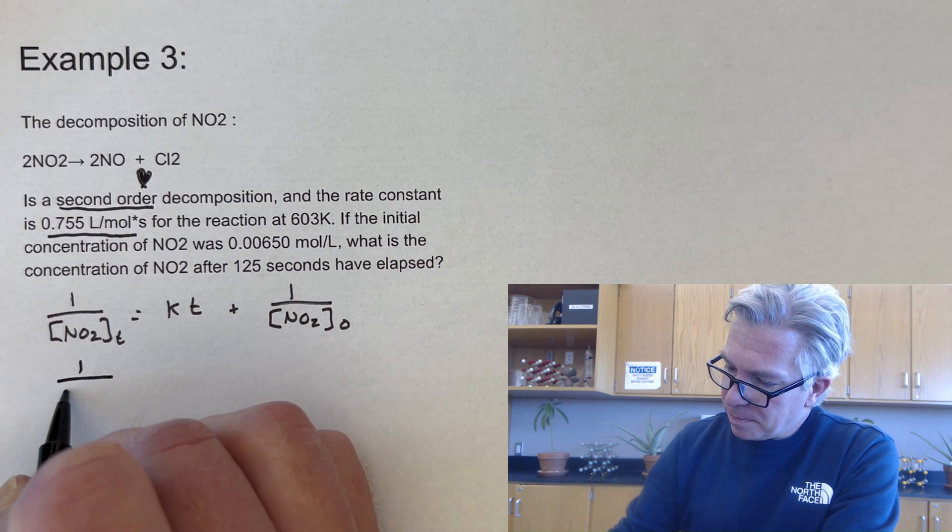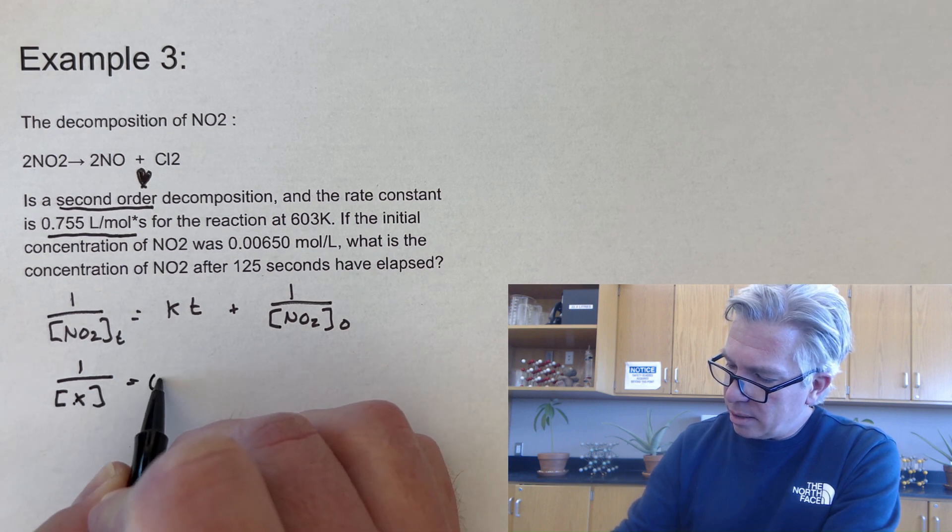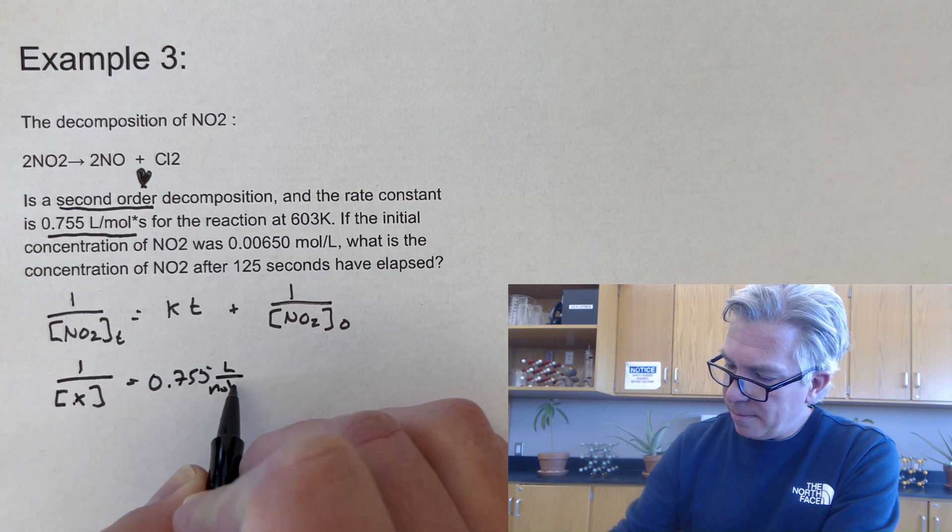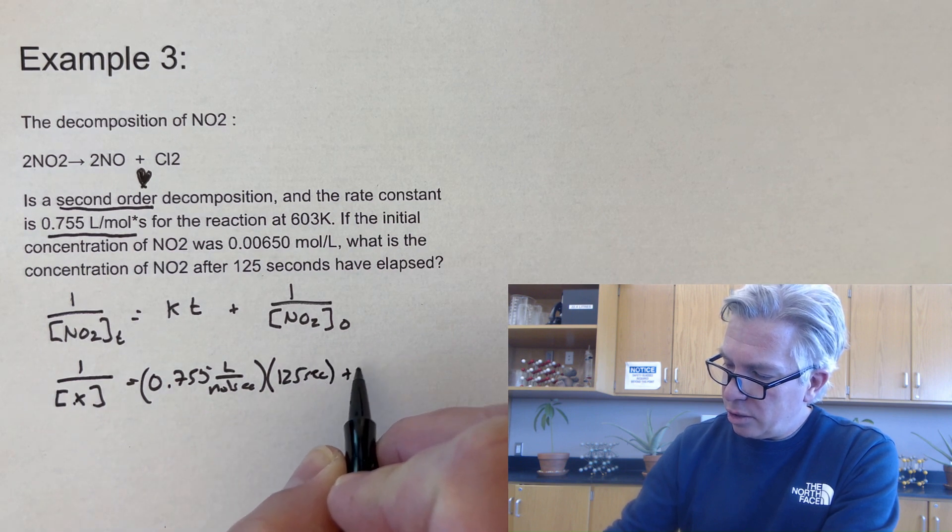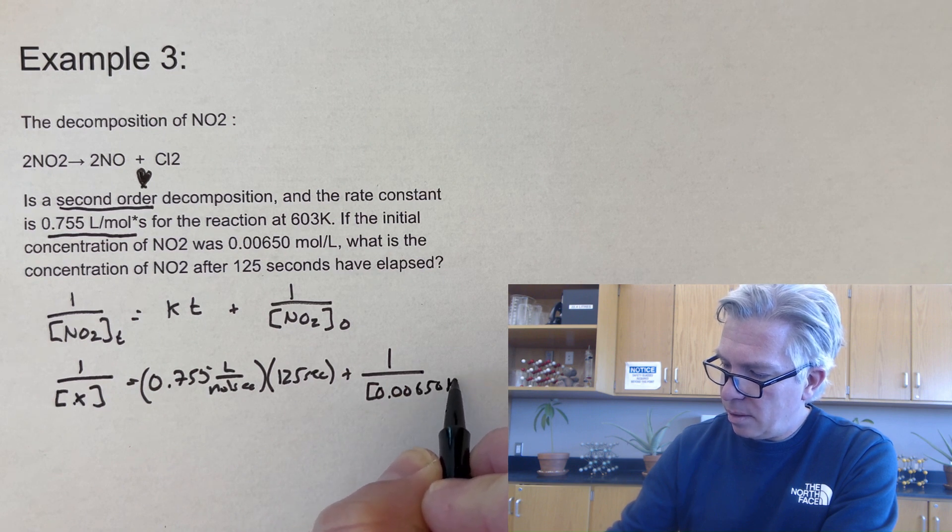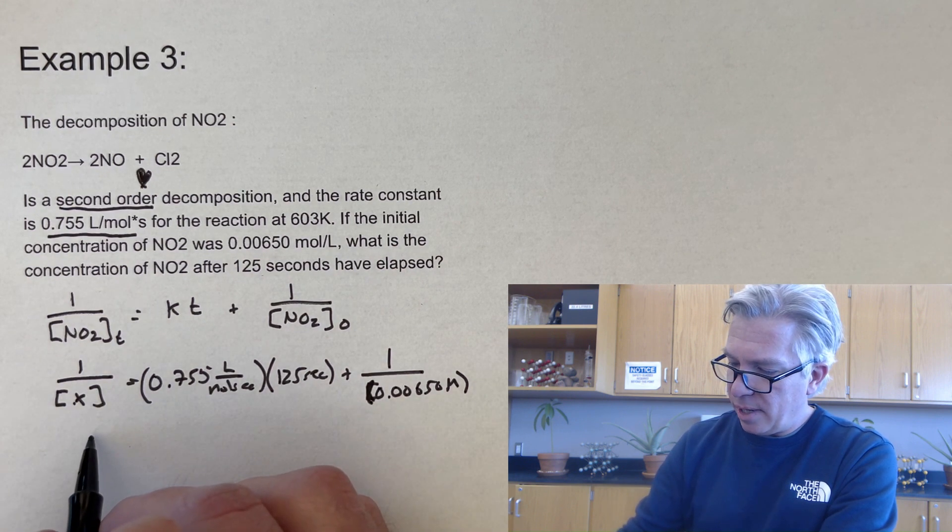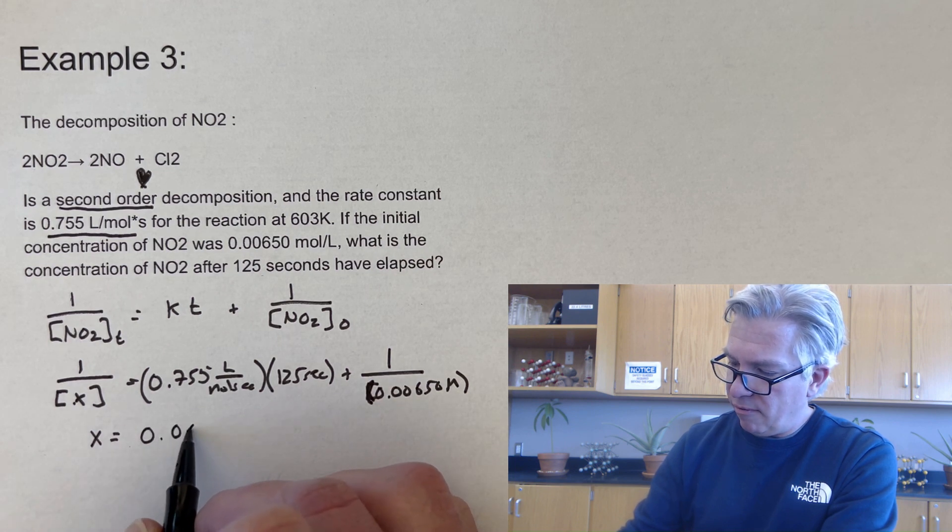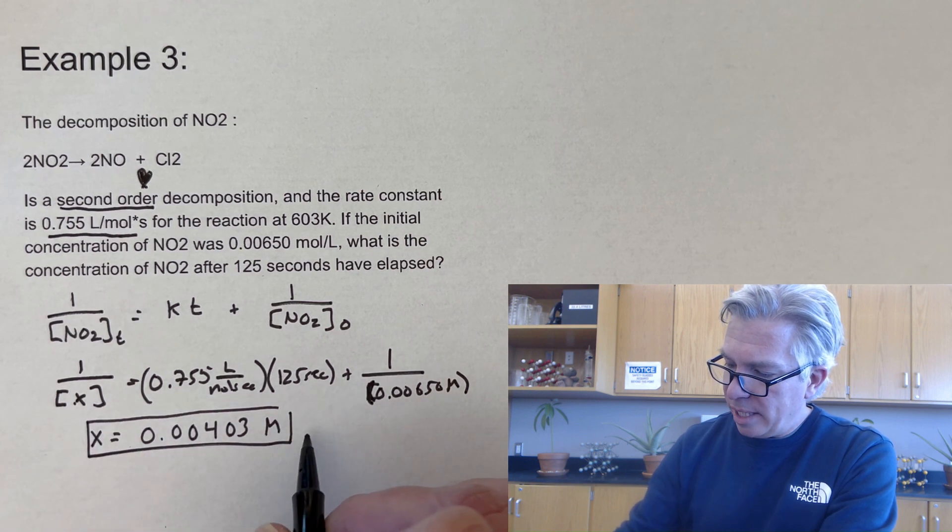All right. Tangent over. And I'm going to go ahead and put in X. Now the rate constant is 0.755 liters per mole second. And the time is 125 seconds. And the original concentration was 0.00650. All right. And so I'm just take the inverse of that, work it all out and solve for X.